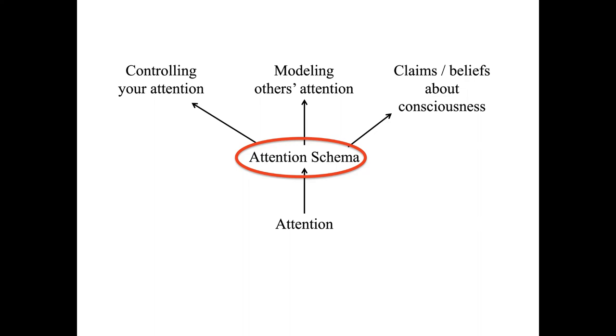The TPJ is just one node in a larger network, and it's unlikely to operate alone. It probably has many functions beyond the ones noted here. But I think a fair amount of evidence points to the TPJ as at least helping to construct a model of attention. That model can be applied to oneself or to other people.